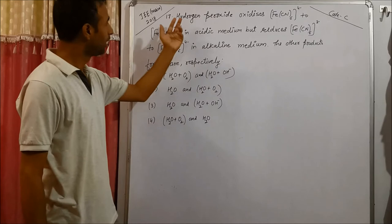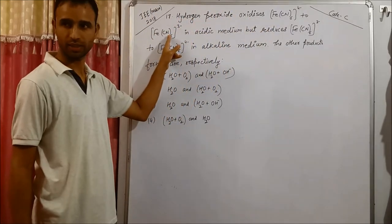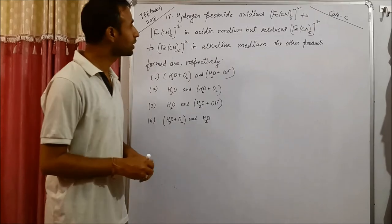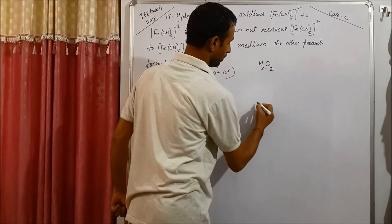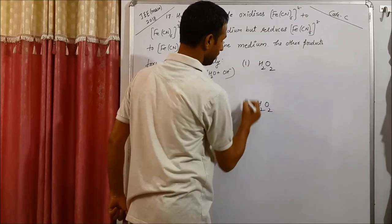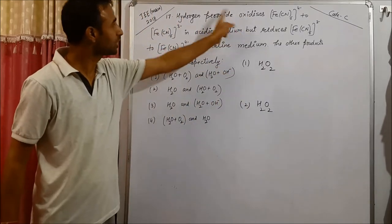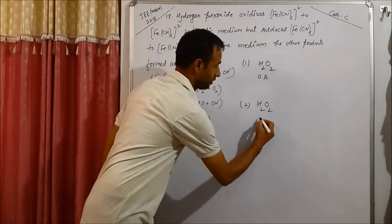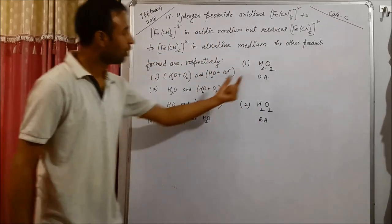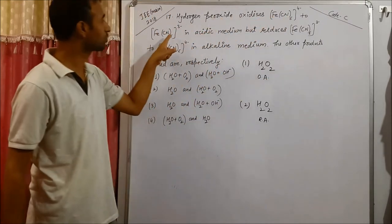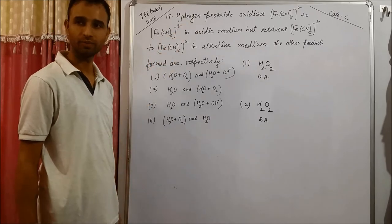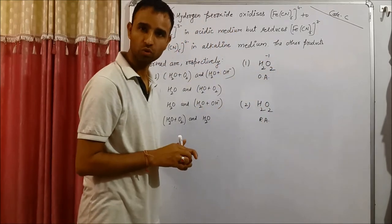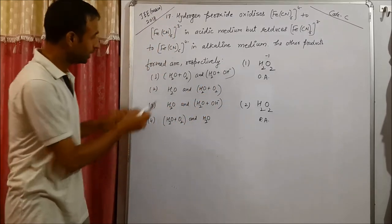In this question, hydrogen peroxide oxidizes this complex in acidic medium and reduces the next in alkaline medium. H2O2 appears two times: first case and second case. That means H2O2 oxidizes, so H2O2 is an oxidizing agent.